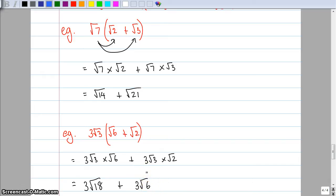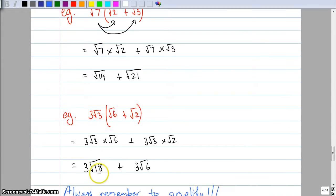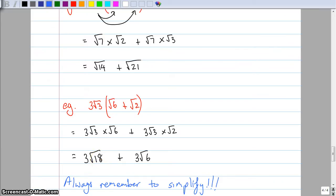But we always, always, always need to simplify. So I need to look at my root six, I can't simplify that. I need to look at my root eighteen, I can simplify that. There's a number at the top that goes into root eighteen, and I'm going to say that that is root nine. So you always remember to simplify.